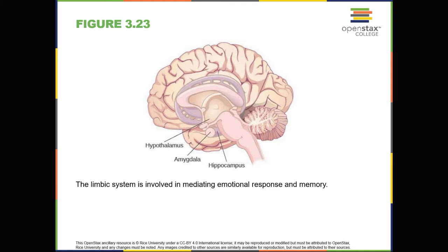The case of Henry Molaison, H.M. In 1953, Henry Gustav Molaison, known as H.M., was a 27-year-old man who experienced severe seizures. In an attempt to control his seizures, H.M. underwent brain surgery to remove his hippocampus and amygdala. Following the surgery, H.M.'s seizures became much less severe, but he also suffered some unexpected and devastating consequences of the surgery. He lost his ability to form many types of new memories. For example, he was unable to learn new facts, such as who the President of the United States was.